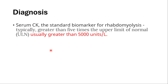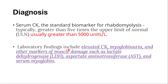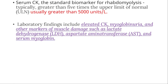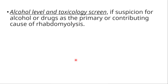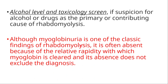To diagnose Rhabdomyolysis, we use serum CK levels as the standard biomarker — typically greater than five times the upper limit of normal and usually greater than 5,000 units per liter. Laboratory findings include elevated CK, myoglobinuria, and other markers of muscle damage such as lactate dehydrogenase and aspartate aminotransferase. We also check alcohol level and a toxicology screen, since alcohol or drugs can contribute to or cause Rhabdomyolysis. Although myoglobin in the urine is a classic finding, it's often absent due to the rapidity with which myoglobin is cleared, and its absence does not exclude the diagnosis.